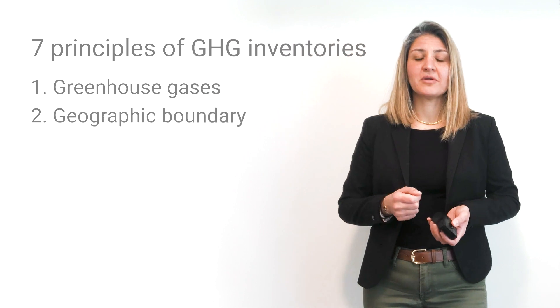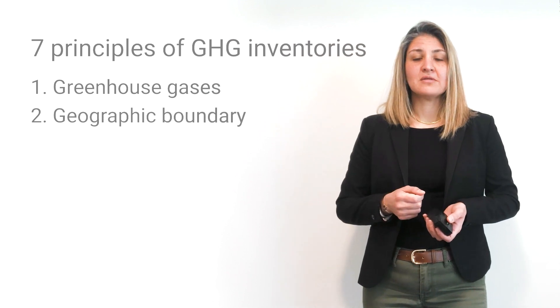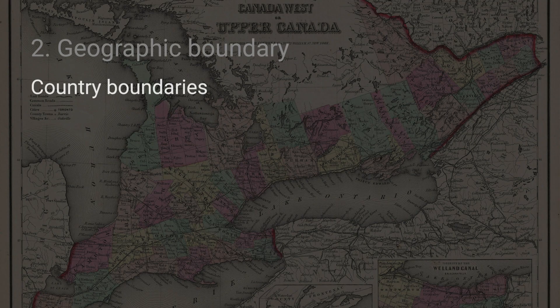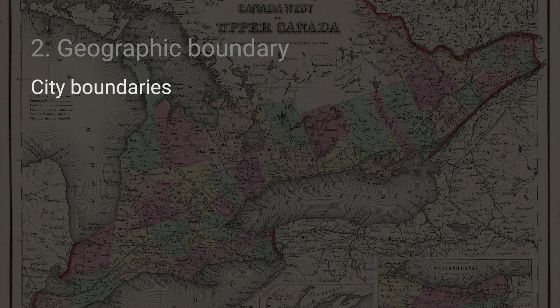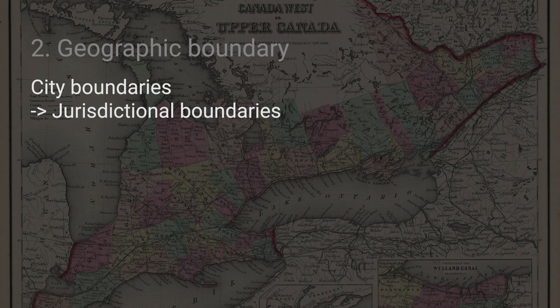Second is geographic boundary. City boundaries are tricky. Country boundaries are a little bit easier to determine because there are country borders known to all of us. City boundaries, for the purpose of inventories, is the jurisdictional boundary where a municipality owns, operates, and delivers municipal services. That is the boundary of interest when it comes to greenhouse gas emissions accounting for urban regions.